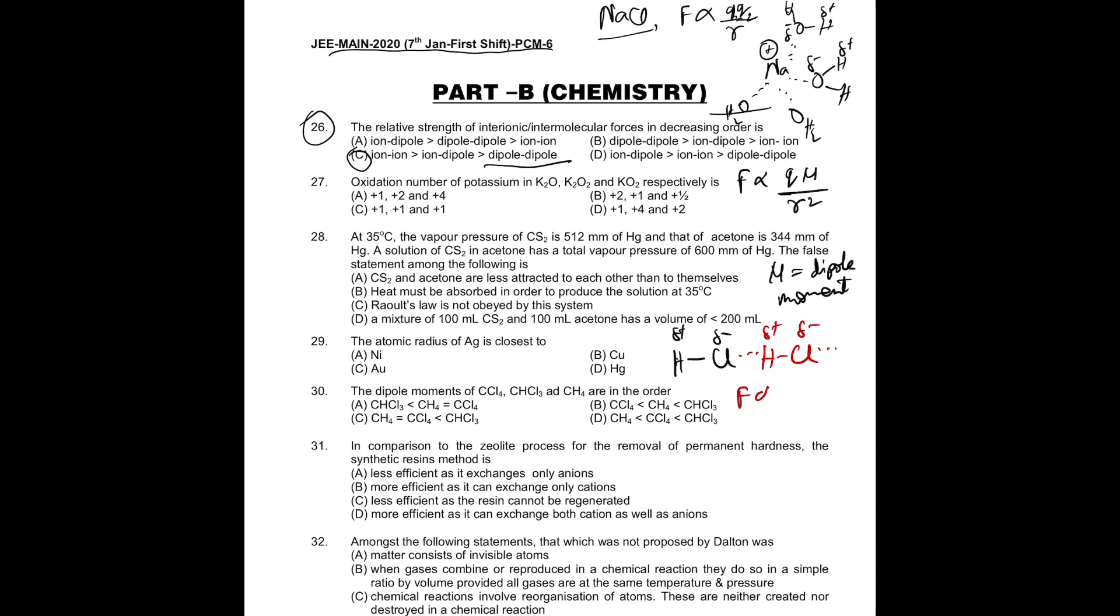So here again, force between them is proportional to dipole 1 into dipole 2 divided by R cube. As you can see, 1 by R is greater than 1 by R square greater than 1 by R cube. And that's why ion-ion interaction will always be greater than ion-dipole greater than dipole-dipole interaction.